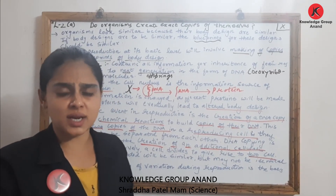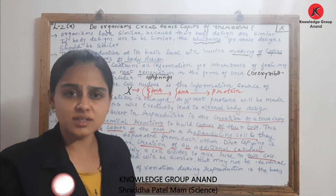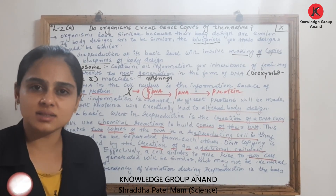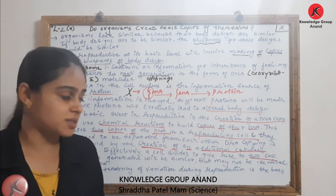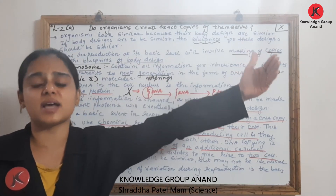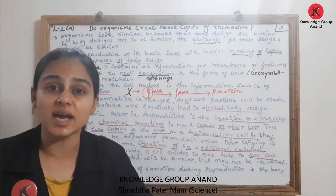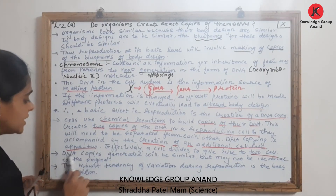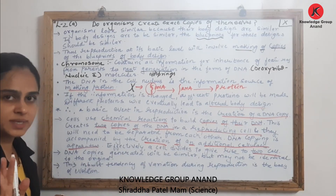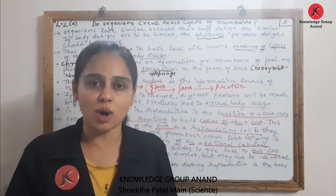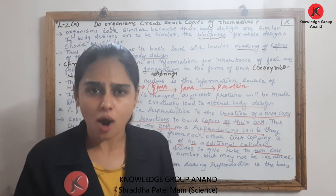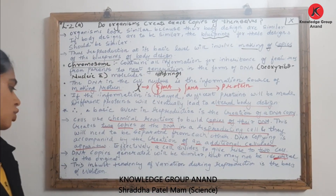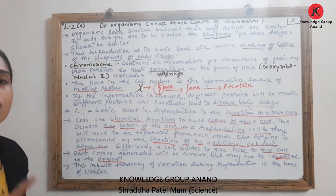Now, are these two cells formed from a single cell exactly the same? The DNAs in the daughter cells are similar to those of the parent cell, but they are not exactly identical. DNA copies generated will be similar — they code for two hands, two eyes, and so on, so characters will be the same — but may not be identical to the original.